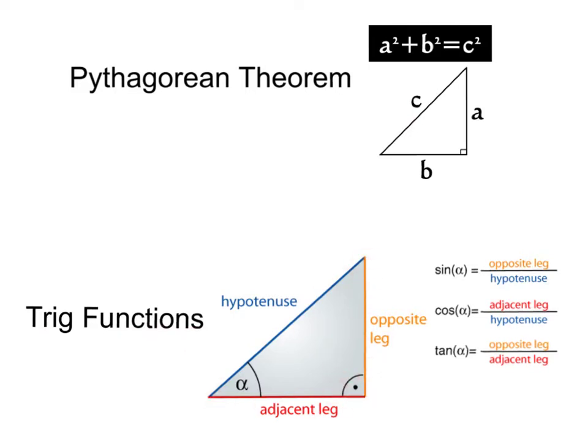Here's our right triangle, here's our right angle. According to our angle alpha, this side would be adjacent to the angle. This side here would be opposite to the angle, and of course here's our hypotenuse. Whereas the sine of that angle would be opposite over hypotenuse, the cosine would be adjacent over hypotenuse, and the tangent would be opposite over adjacent.